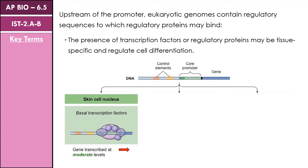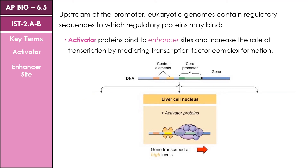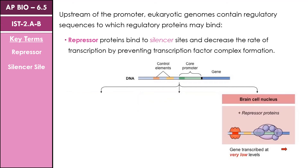We can also include things that increase the level of gene transcription — these are known as activator proteins. Activator proteins bind to what we call enhancer sites and increase the rate of transcription by mediating transcription factor complex formation, so they're able to pull in more transcription factors to produce a greater level of transcription within the cell. We also have silencer sites which can bind repressor proteins, and these decrease the rate of transcription by preventing the formation of transcription factor complexes, thus decreasing the amount of transcription that RNA polymerase is able to undergo.